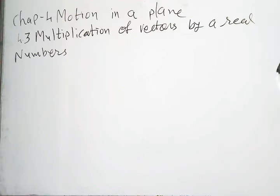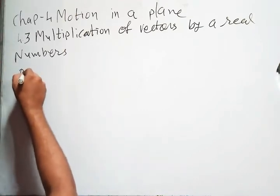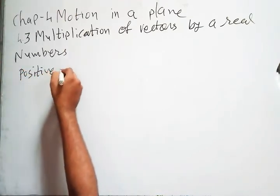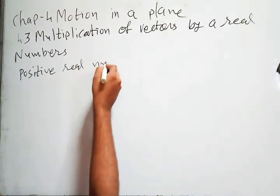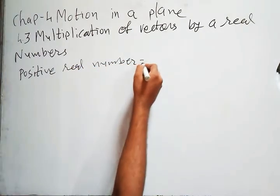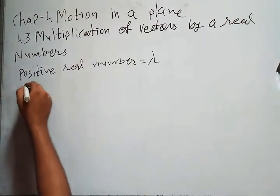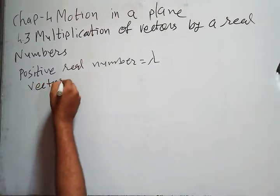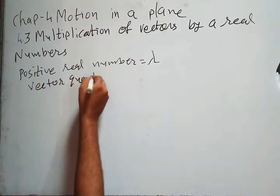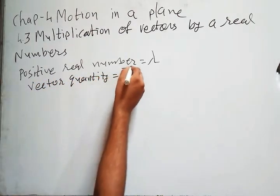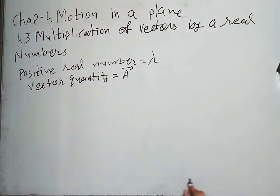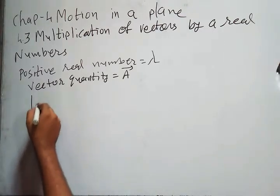For multiplication of vectors, for example, we take a positive real number lambda. Lambda is a scalar quantity. The vector quantity is vector A. Now if we do the multiplication...